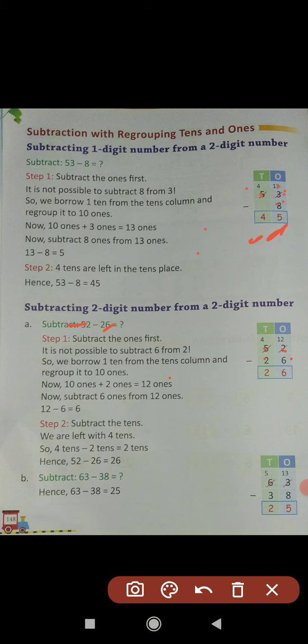So we have to take 1 borrow from 5. When we take 1 borrow from 5, this 5 converts into 4 (5 minus 1 equals 4), and this 2 converts into 12. We can now subtract easily: 12 minus 6 equals 6. Write 6 in the ones place column. Then 4 minus 2 equals 2. Hence 52 minus 26 equals 26.